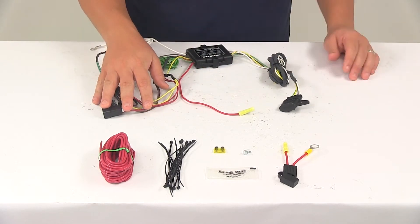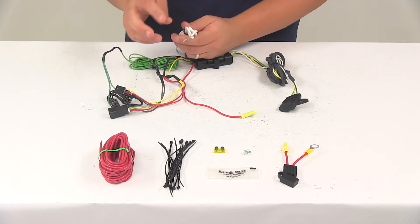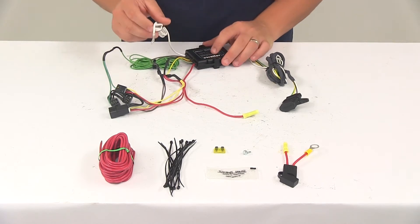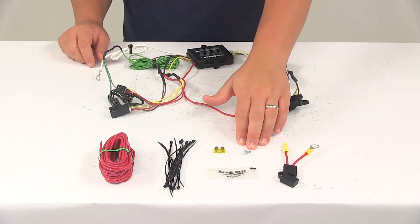So once you have your connections made, you can make your ground connection. That's going to be your white wire with the ring terminal attached to it. You want to get this grounded to a nice clean metal surface with the included grounding screw.